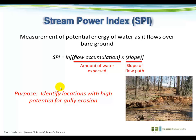The idea is that the more water we expect to be flowing over the landscape at a certain point — indicated by the flow accumulation grid — the higher the likelihood of showing erosion. Also, the higher the slope at a particular location, the higher likelihood of experiencing erosion. So really, the purpose of the SPI value is to identify locations in our study area with high potential for gully erosion.